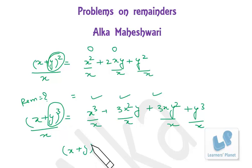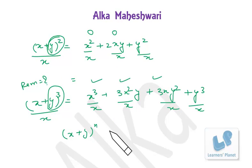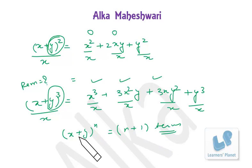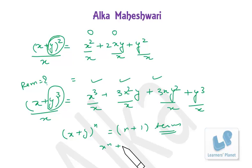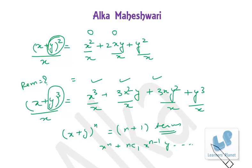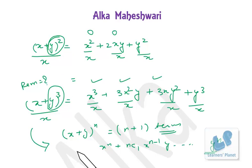This is basically the binomial concept — we are using the binomial theorem. For (x+y)ⁿ, there will be n+1 terms in the expansion. All the terms will be multiples of x except the last term, which is yⁿ. The expansion is xⁿ + nC1·x^(n-1)·y + … and the last term is x⁰·yⁿ = yⁿ, which is not a multiple of x. So the remainder is yⁿ.